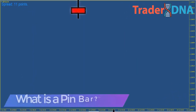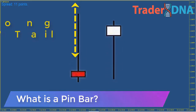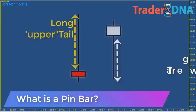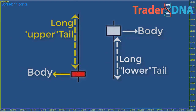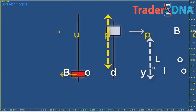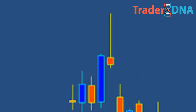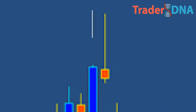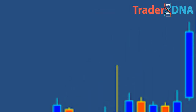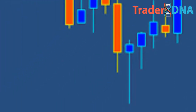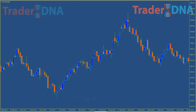So what is a pin bar? The actual pin bar itself is a bar with a long upper or lower tail and a much smaller body. You can find pin bars on any naked bar chart or candlestick chart. We use candlestick charts because they show price action the clearest and are the most popular charts amongst professional traders. Many traders prefer the candlestick version over standard bar charts because it is generally regarded as a better visual representation of price action.